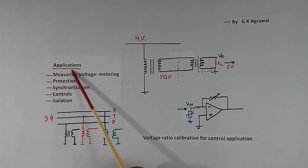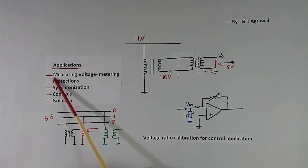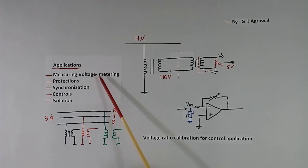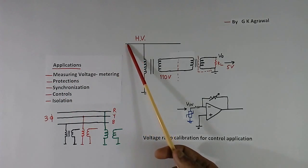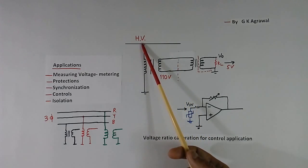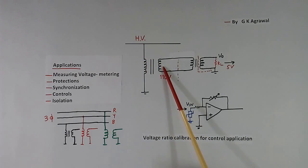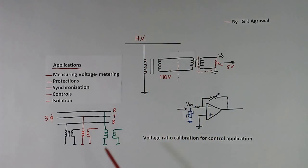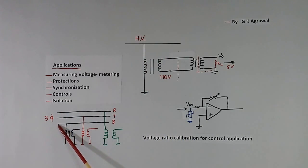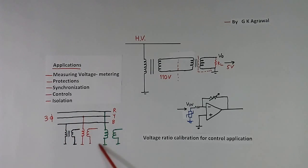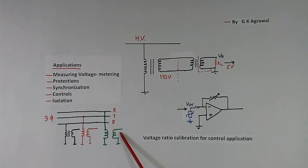Now we come to applications. The first application is measuring voltage — metering. We want to know what is the voltage at a high voltage point, so we connect a PT and at the secondary we connect a voltmeter. I have shown single phase here, but generally power supply in industries will be 3-phase. For 3-phase, we connect 3 PTs — shown here in black, red, and green colors — and 3 voltmeters, or there will be 1 voltmeter with a switch.